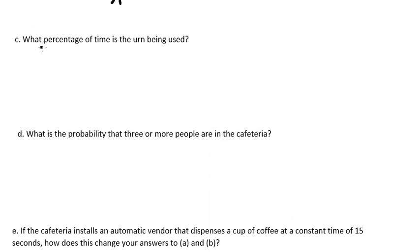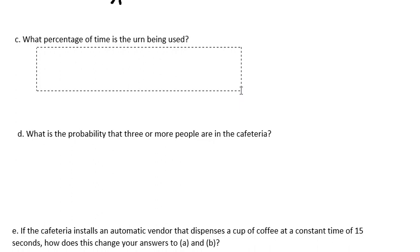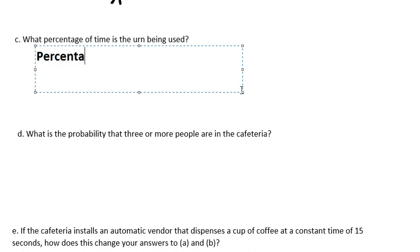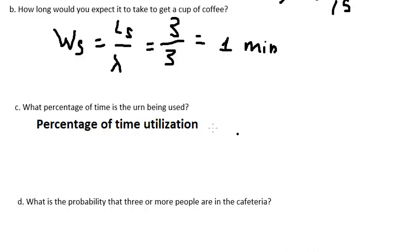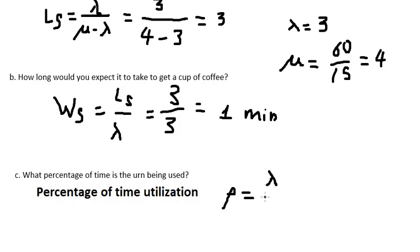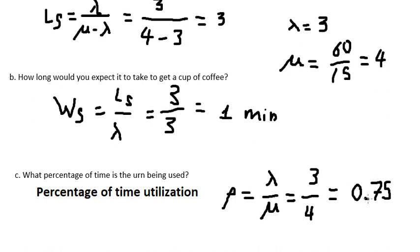Question C: what percentage of time is the counter being used? We use the utilization formula: rho equals lambda divided by mu, so 3 divided by 4, giving us 0.75 or 75%.